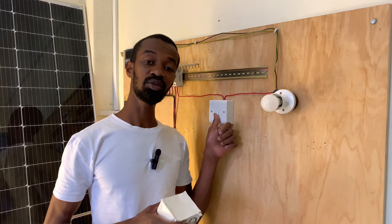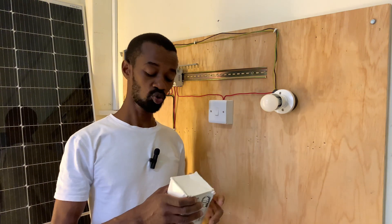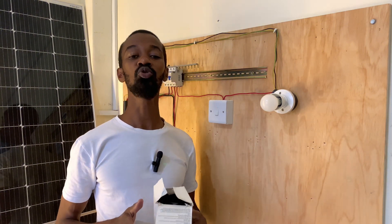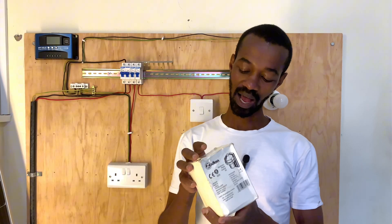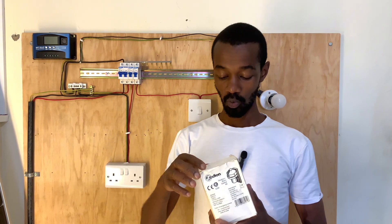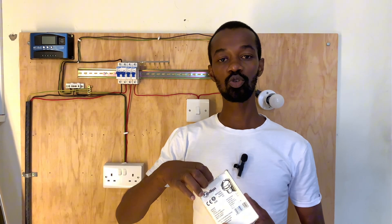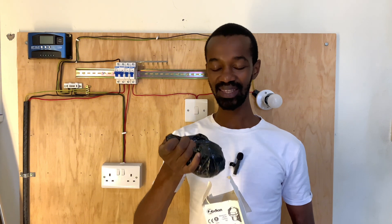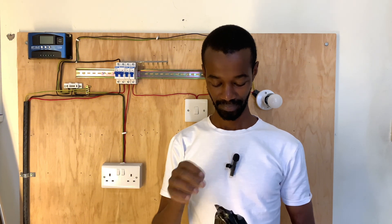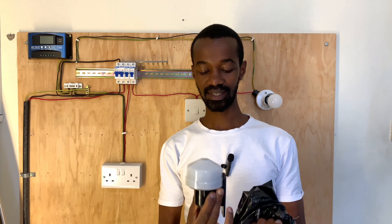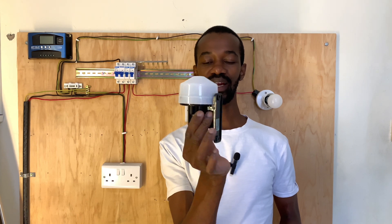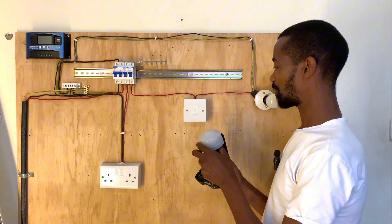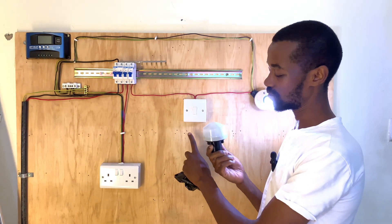Welcome to today's video where we are talking about changing this manual switch into something that is automatic. We are going to use a photo cell — I have a Zodion photo cell whereby I will be able to activate the light using this sensor. This is the photo cell that I have, so instead of this manual switch, which I will get rid of, I will have to wire this.